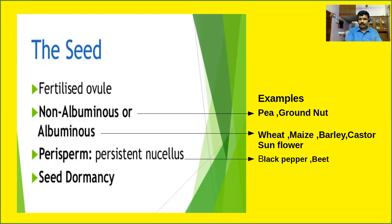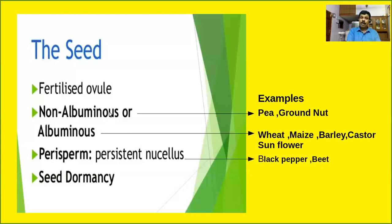Endosperm is actually the nutritive tissue present inside the seeds. We have discussed the development of endosperm and embryo previously. In non-albuminous seeds, there will be no residual endosperm, as it is completely consumed during embryo development. There is no residual endosperm in such seeds. Examples are pea and groundnut.